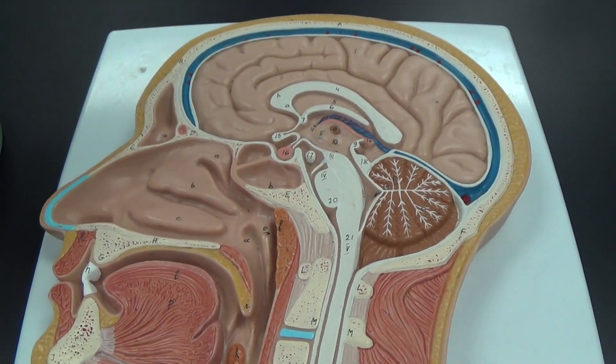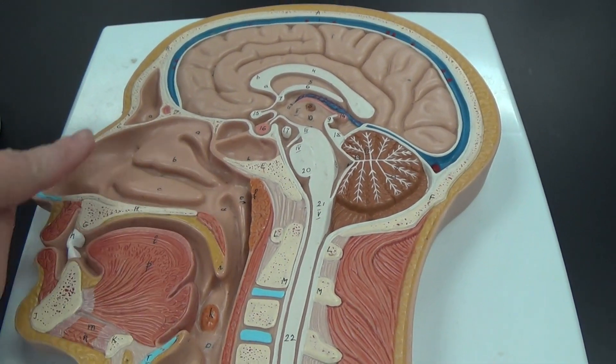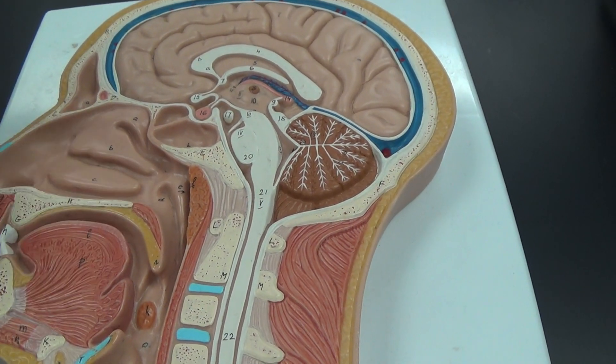Starting with the respiratory system, we have the opening for the external nares that lead into the nasal cavity. These bumps in the nasal cavity are the nasal conchi.